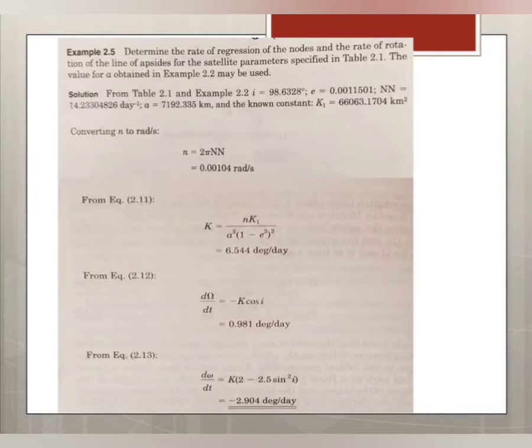Let's see a problem: determine the rate of regression of the nodes and the rate of rotation of the line of apsides. So these two values are asked, that is dΩ/dt and dω/dt.